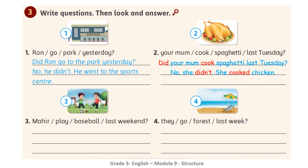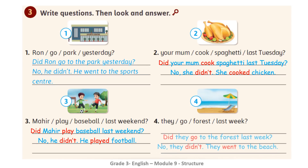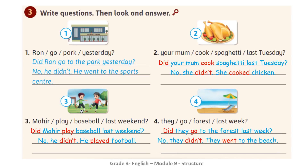Now let's check your answers. Number two: 'Did your mom cook spaghetti last Tuesday?' Look at the picture — no, she didn't; she cooked chicken. Number three: 'Did Maher play baseball last weekend?' No, he didn't — he played football. Number four: 'Did they go to the forest last week?' No, they didn't — they went to the beach.